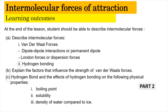We're also going to look at the effect of hydrogen bonding on the following physical properties: boiling point, solubility, and the density of water in comparison to ice. For learning outcomes A1 and B, please refer to Part 1 of the video. For now, let us focus on subtopic 4.4 Part 2.